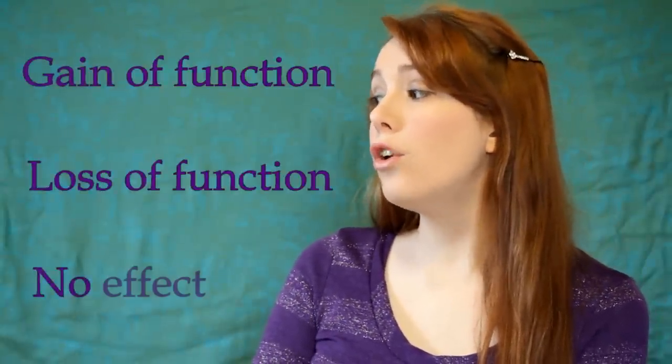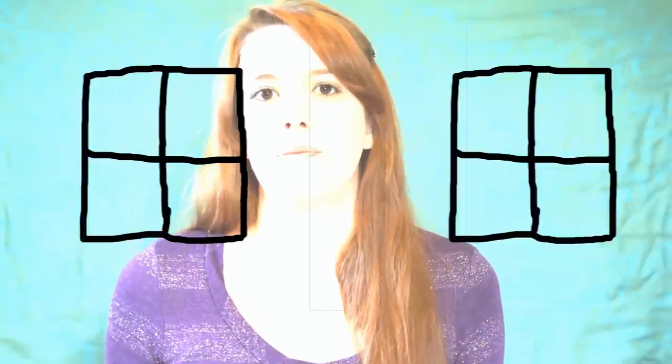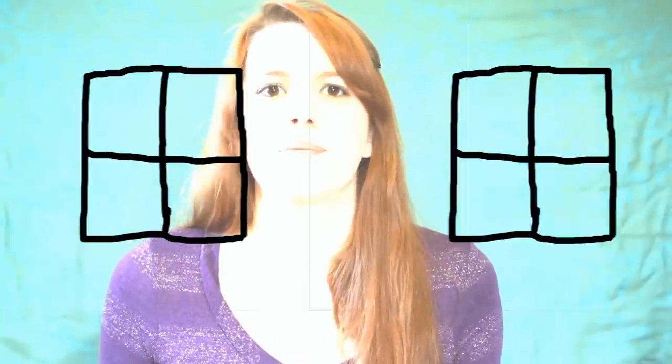But we also need to look at what effect those changes have. You can have a gain of function, a loss of function, or no change at all. Gain of function means something's been added, but it doesn't always mean you've gotten a superpower. Let's say our original instruction said "build a wall and put in a window," and our mutation accidentally changed the instructions to say "put in two windows" — now we have twice as much light in the room. Loss of function is the opposite: the mutation changed it to say "put in no windows," so now we're sitting in the dark.